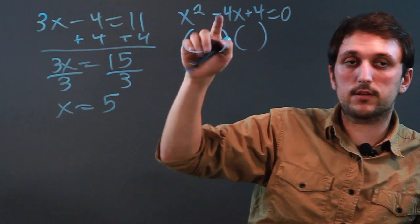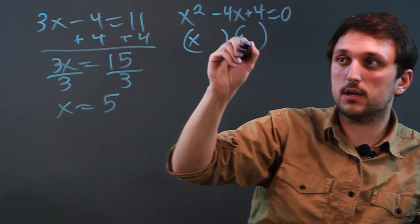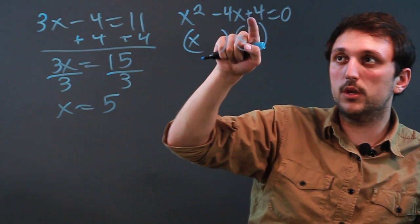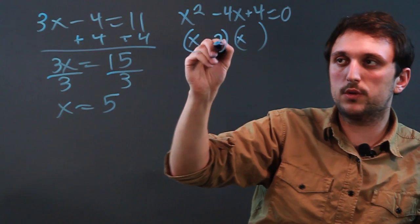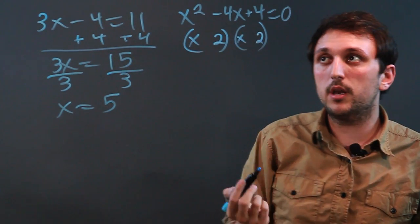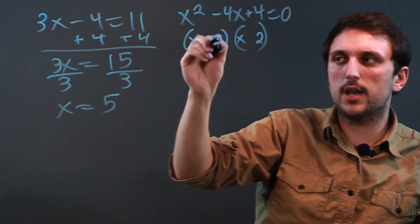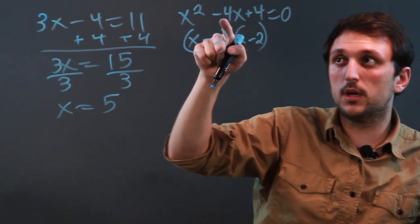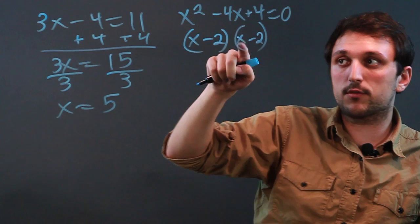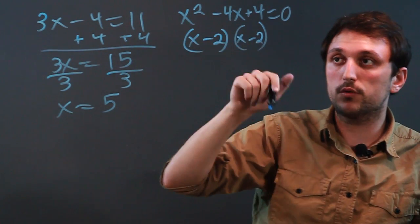And we say, okay, well x squared is x times x. And then we know we have 4 over here, so that's 2 times 2. But do we go negative 4, let's see, we want to say negative 2 and negative 2. So that negative 2x plus negative 2x equals negative 4x.